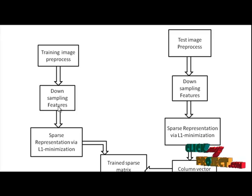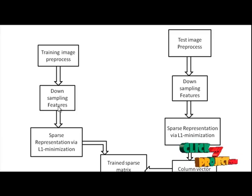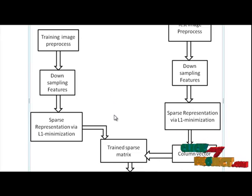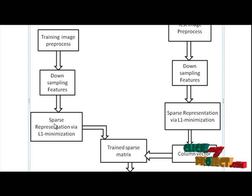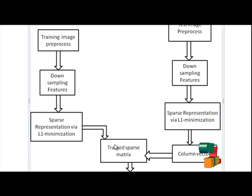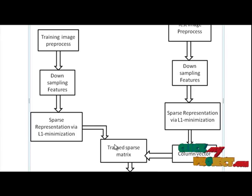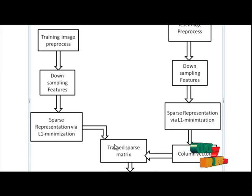In that model, downsampling features are extracted from each k subject in our training dataset. The next step is sparse representation. Extracted features are arranged in non-zero representation — that is called sparse representation via the L1 minimization algorithm. Each sample is arranged in rows and the extracted downsampling features are arranged in columns. In this way, we arrange our trained sparse matrix.